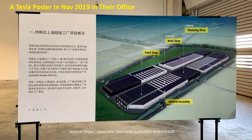This is a poster from early on — roughly November 2019 — before the Model 3 factory was finished. The poster was presented in Tesla's office during a journalist visit, and the source of the image is provided. This image shows the initial design of the Shanghai Gigafactory. We can see a big stamping shop, body shop, paint shop, and general assembly line — which is exactly how the Phase 1 Model 3 factory was built.